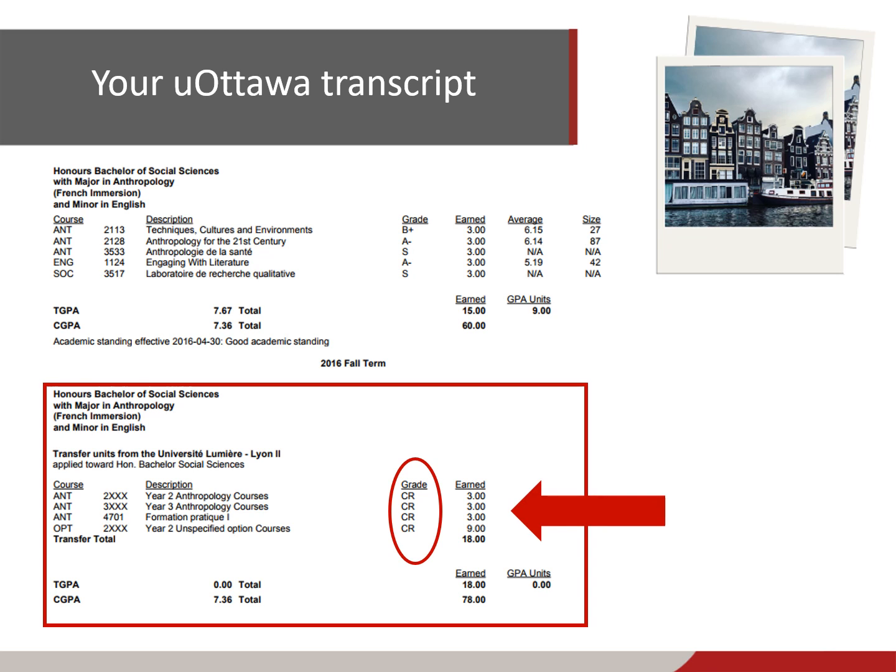Here is an example of how course equivalencies from your exchange will be displayed on your uOttawa transcript. The courses you complete during your exchange will transfer to your program of study at the University of Ottawa and will appear as course equivalencies as determined by your faculty's academic specialist. The grades will not appear on your uOttawa transcript — instead, under the grade section, you will receive a CR, which means credits, equivalent to a passing grade.